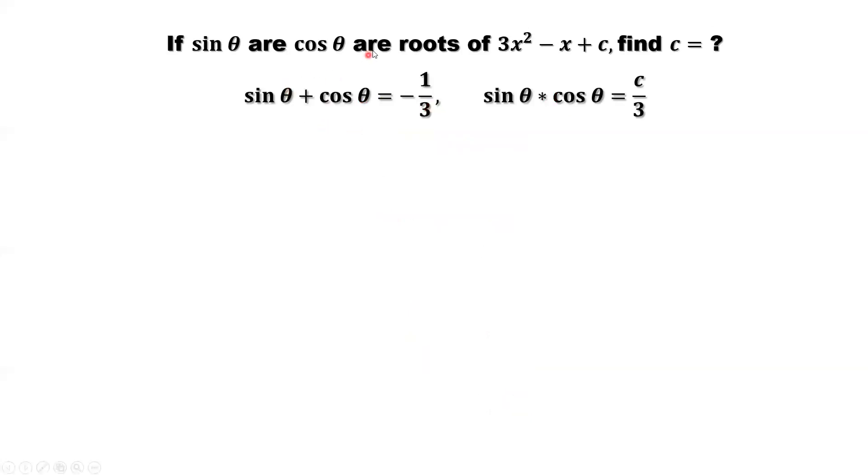So here, that's the result from the previous page. Sine theta plus cosine theta equals negative 1 third. Sine theta times cosine theta equals c over 3. What we want to find? We want to find c.